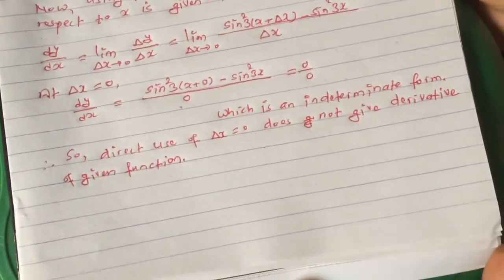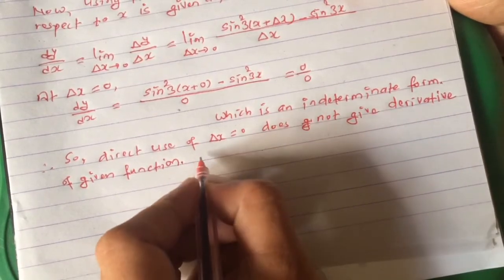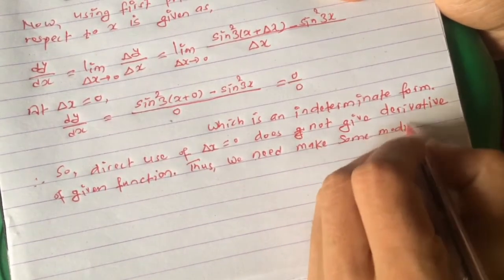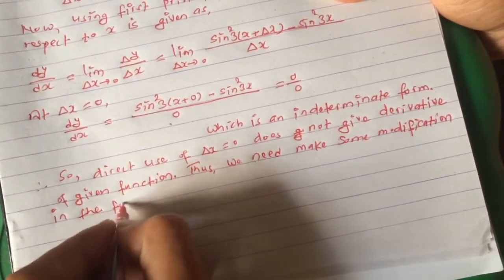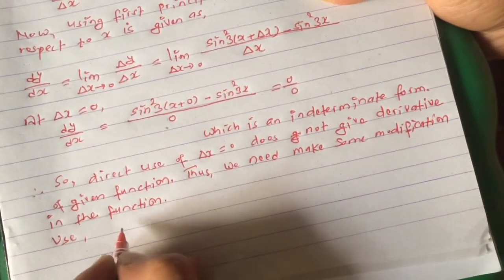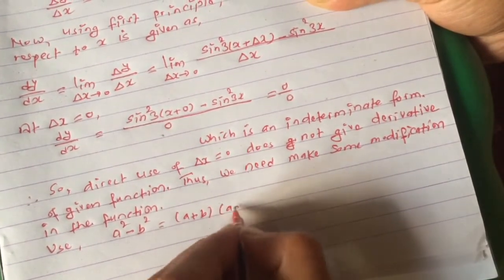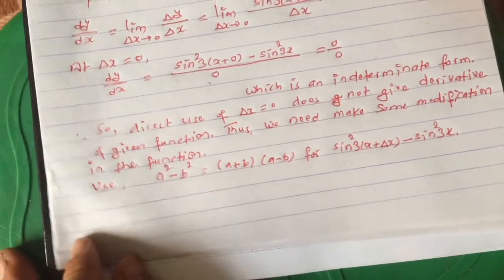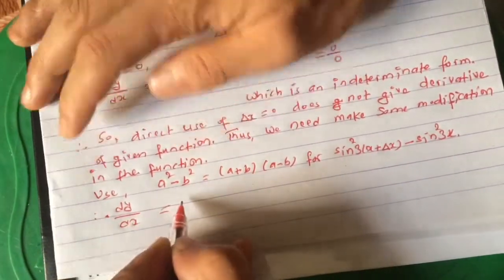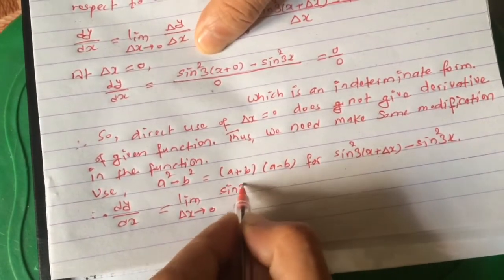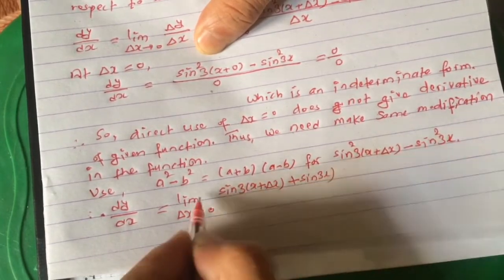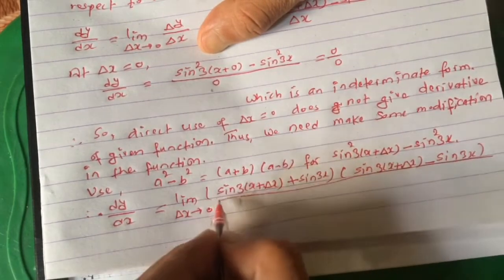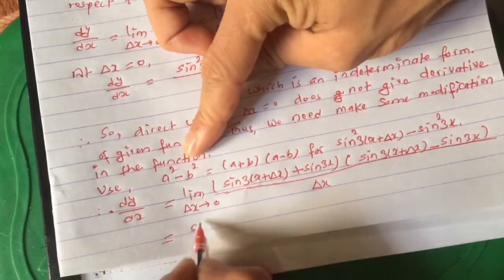The modification we make is to apply the identity a² − b² = (a + b)(a − b) for sin²(3(x + Δx)) − sin²(3x). Then dy/dx = limit as Δx→0 of [sin(3(x + Δx)) + sin(3x)] × [sin(3(x + Δx)) − sin(3x)] / Δx.